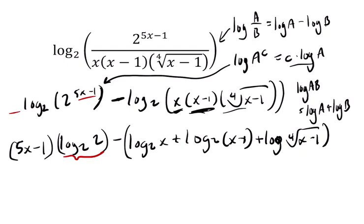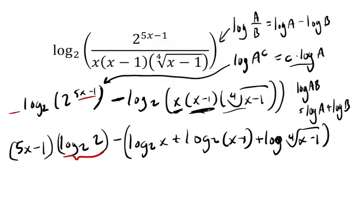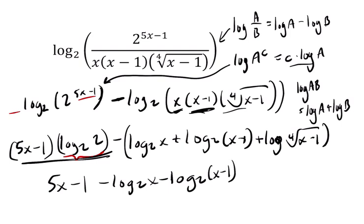So we have 5x minus 1 times 1, or just 5x minus 1 in this term right here. Then we subtract out each piece of this sum here. So we have minus the log base 2 of x minus the log base 2 of x minus 1, and over here, minus 1 fourth the log of x minus 1.